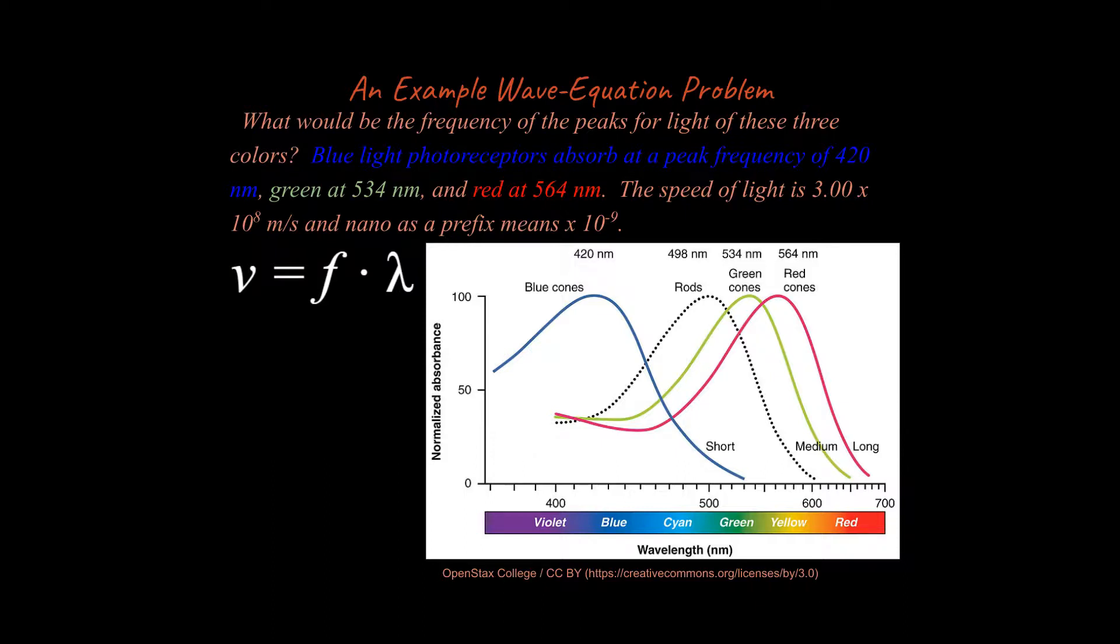Okay, and so building on something we've done in the past, we could talk about the wave equation. So the wave equation that we've used in the past, we'll come back here because here light is behaving like a wave. And so we can run problems using the wave equation. This is incredibly easy to do, and it's a very important equation. So just because it's easy doesn't mean it's not important. So the problem is saying that blue light photoreceptors absorb at this peak, green at this peak, and red at this peak in terms of the wavelengths. And there are a couple things you're going to need to know. First of all, you'll need to know the speed of light is three times 10 to the eighth meters a second. And nano as a prefix means 10 to the negative ninths. So something measured in nanometers is very small.